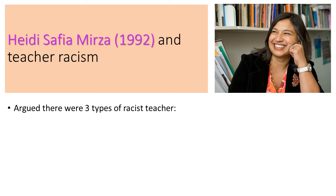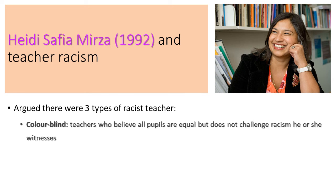Heidi Merzer did interesting research on teacher racism and identified three different types of racist teachers. Firstly, she identified what she called colorblind teachers - those who believe all pupils are equal but do not challenge racism they witness. Although they themselves may not hold prejudiced views, if they see racism - another teacher treating pupils in a way motivated by race or ethnicity - they don't challenge it.